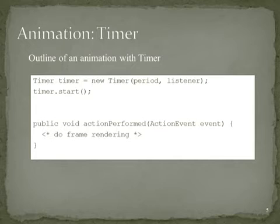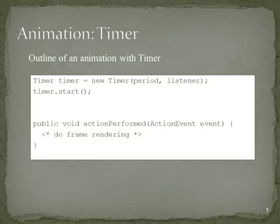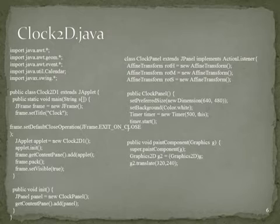The Timer class provides a more convenient approach for animation than explicit creation of threads, because the actionPerformed method is invoked in the event dispatch thread. It is therefore safe to perform rendering on Swing components in this method. The following example demonstrates the application of the Timer class: a real-time analog clock is displayed.